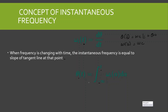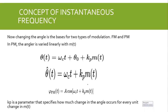Now that we understand instantaneous frequency, we can discuss phase modulation. The changing angle is the basis for two types of modulation: frequency modulation and phase modulation. In phase modulation, the angle is varied linearly with m of t. So phi of t equals omega c·t plus theta naught plus kp·m(t), where m of t is the message signal. Setting theta naught to zero gives theta of t equals omega c·t plus kp·m(t), and the phase modulated signal is cosine(omega c·t plus kp·m(t)). Here kp is a parameter that specifies how much change in the angle occurs for every change in m of t.